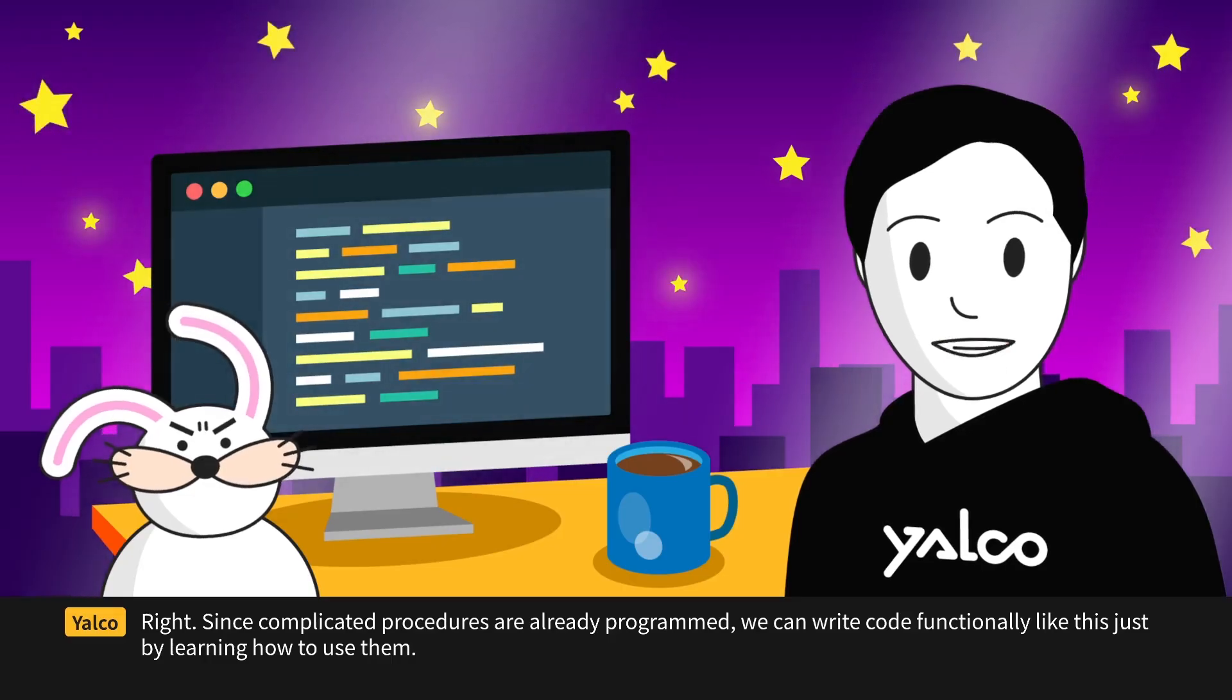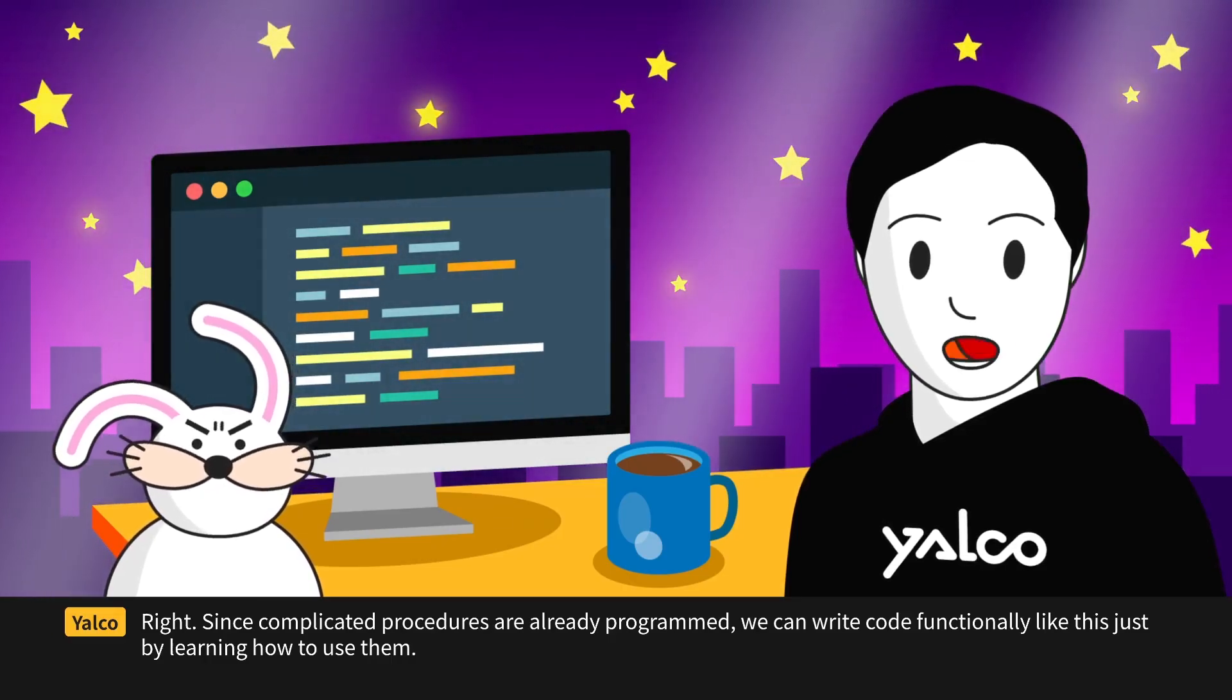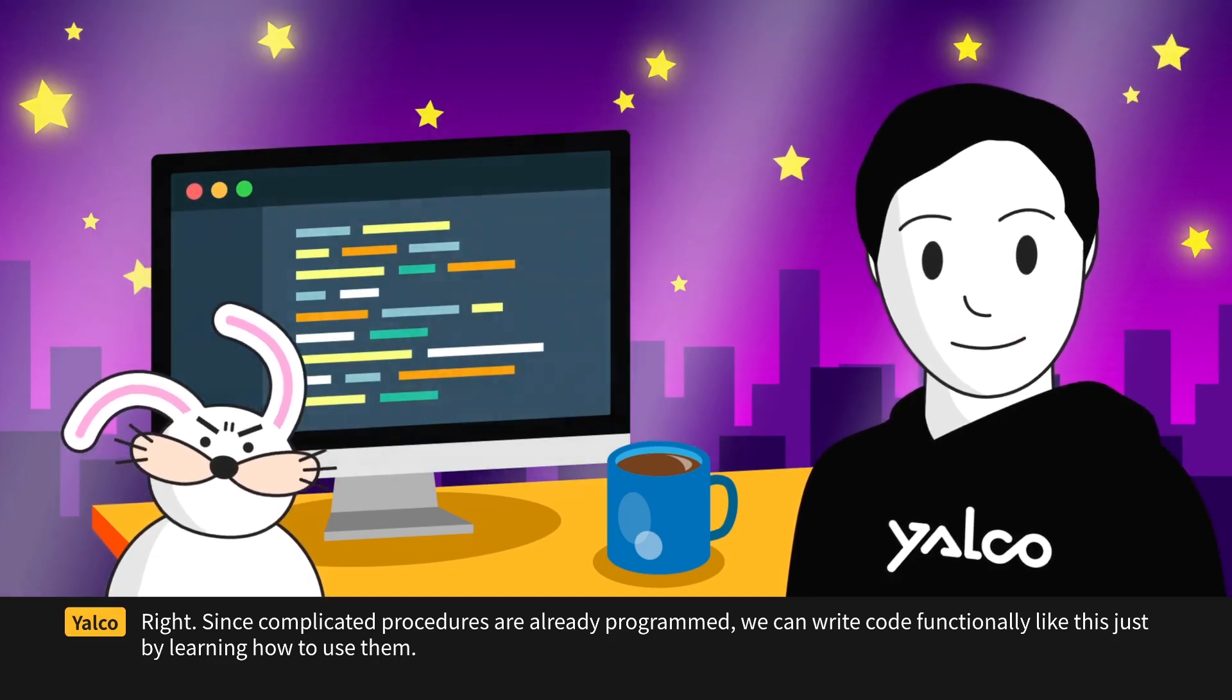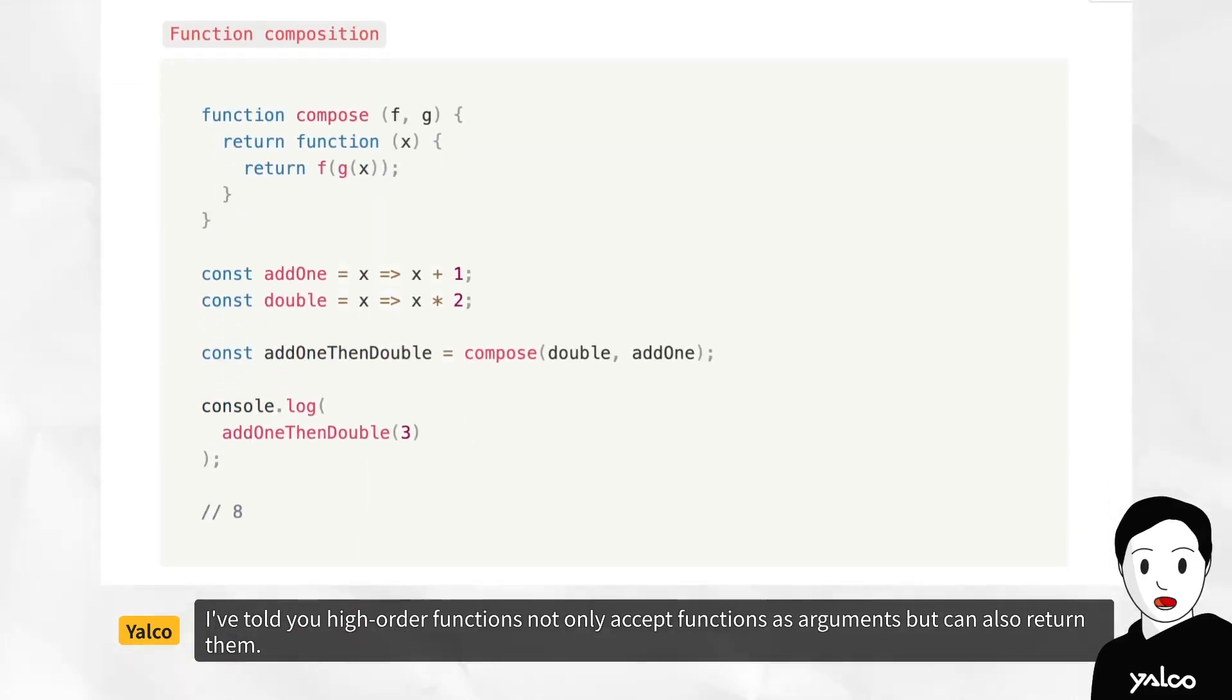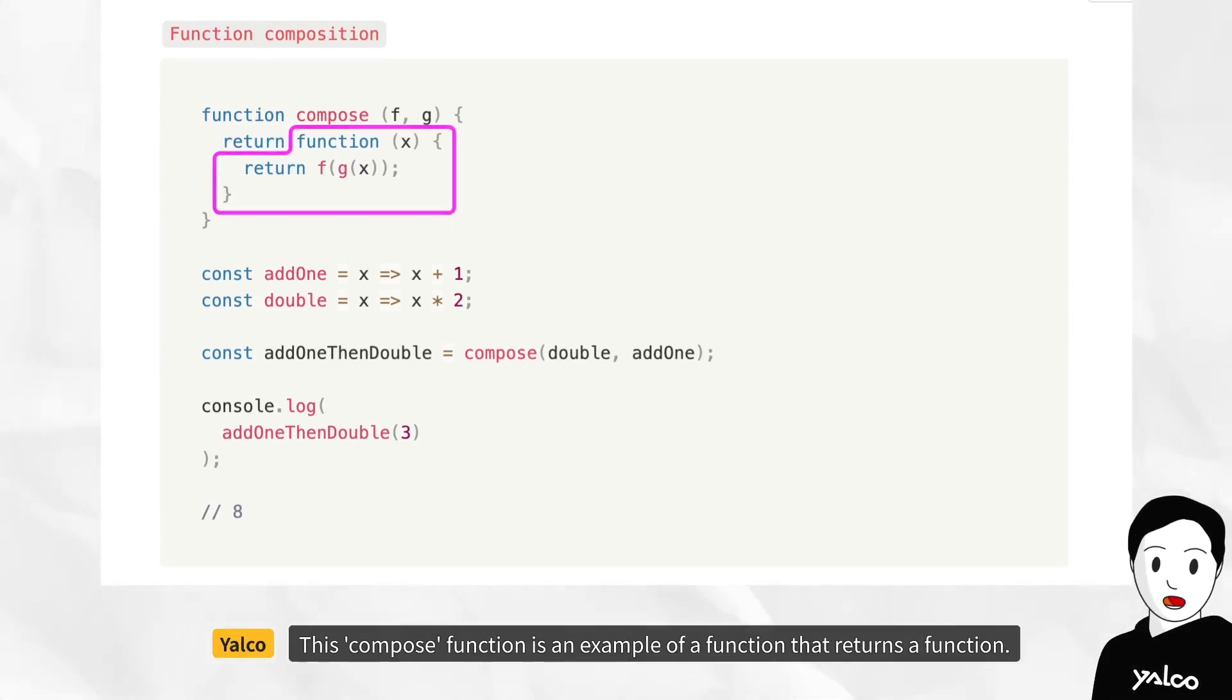So, we can freely use this thing called functional programming because basically the language or library provides these features, right? Right. Since complicated procedures are already programmed, we can write code functionally like this just by learning how to use them.